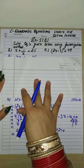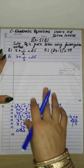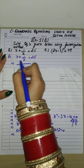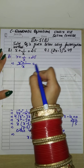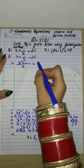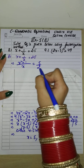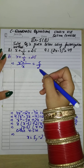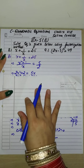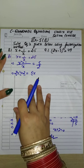Now let's look at the 8th sum. Here we don't start with a quadratic equation directly — we need to simplify first. We take LCM. Taking LCM gives us (x² + 1)/x = 2.5. Since 2.5 in decimal may cause difficulty, we convert it to 5/2. Now we cross-multiply: 2 into (x² + 1) = 5x, giving us 2x² + 2 = 5x.